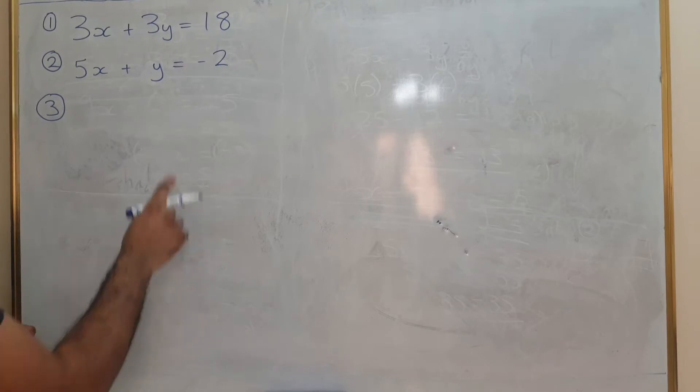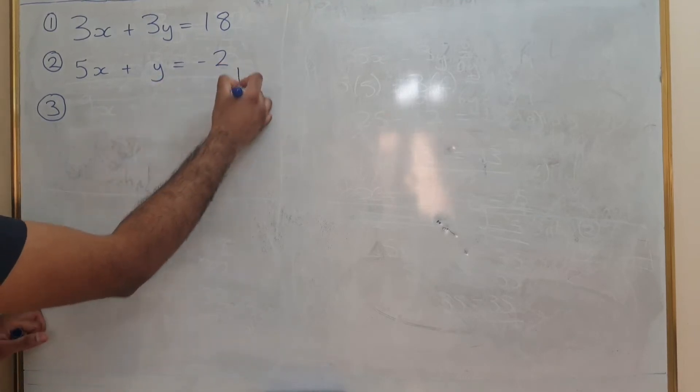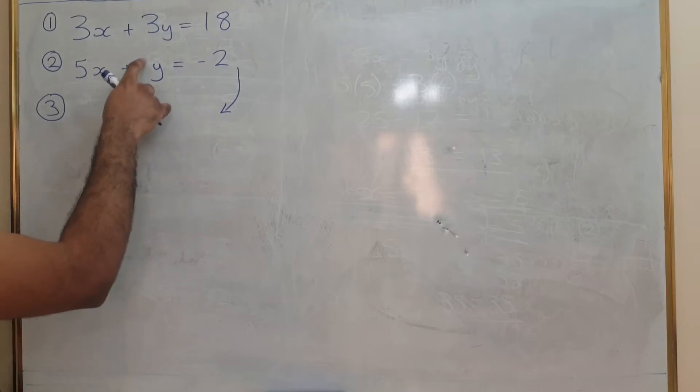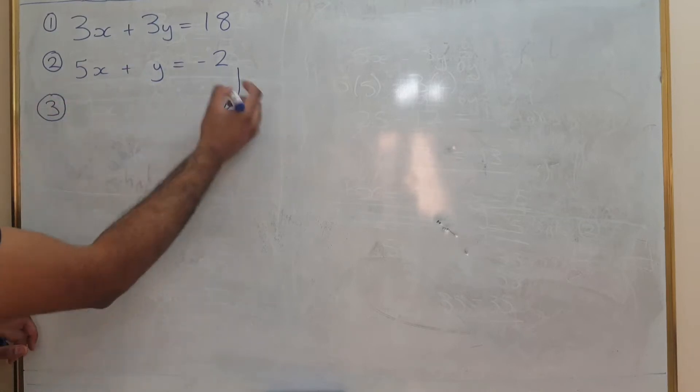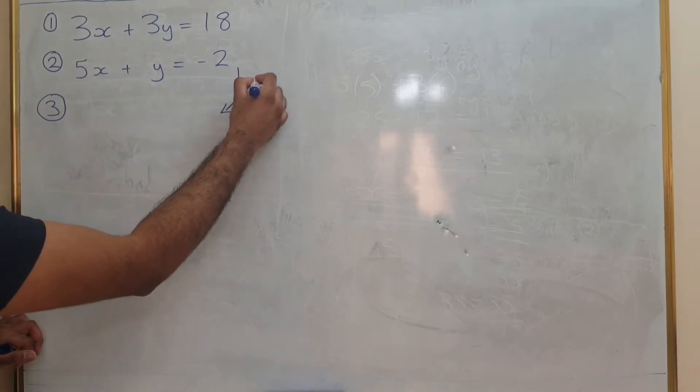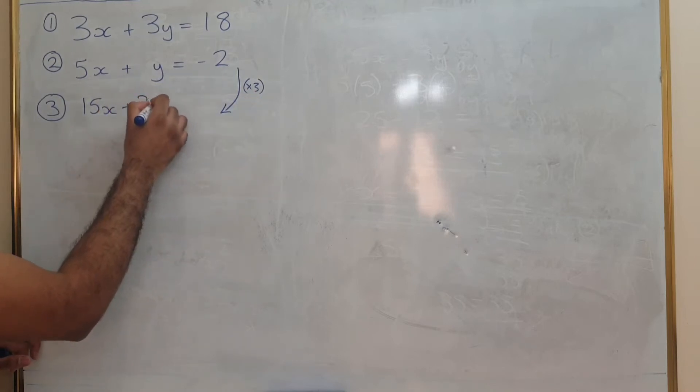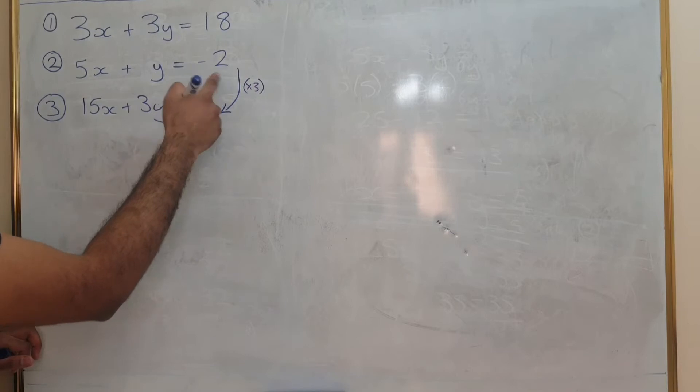What I'm going to do is I'm going to use this equation and just multiply it up so I've got the same number of y's. If I times this up I'm going to have to multiply it by 3, so 5 times 3 is 15x, y times 3 is 3y, and minus 2 times 3 is minus 6.